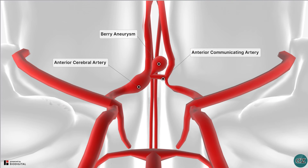Rupture of an aneurysm is a potentially catastrophic and fatal event. A ruptured aneurysm can be treated endovascularly by interventional radiologists who may use coils or stents to secure the aneurysm, or by neurosurgeons who can stop the bleeding by clipping the neck of the aneurysm.